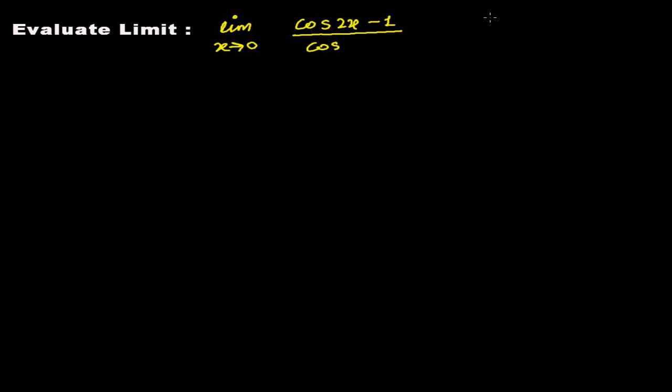We need to use some standard values, then only we can solve the problem. So here again I want to tell you what is our standard form: limit when angle tends to 0, cosine of the angle equals to 1. This is our standard form, so we need to convert in that way and anyhow we should not get 0 over 0 form.